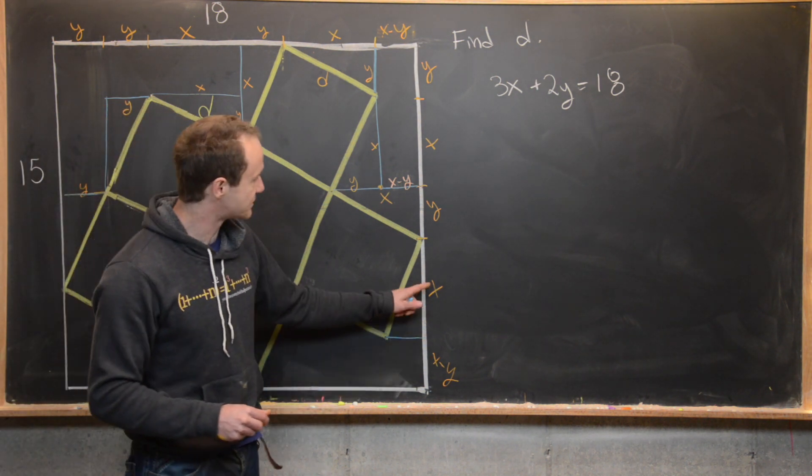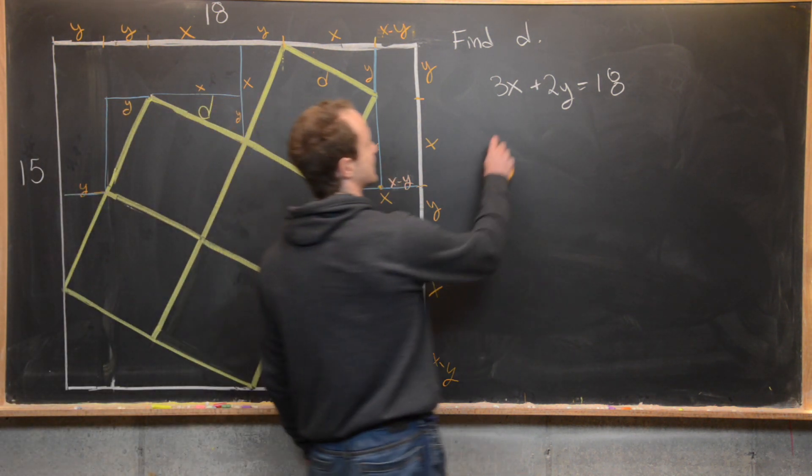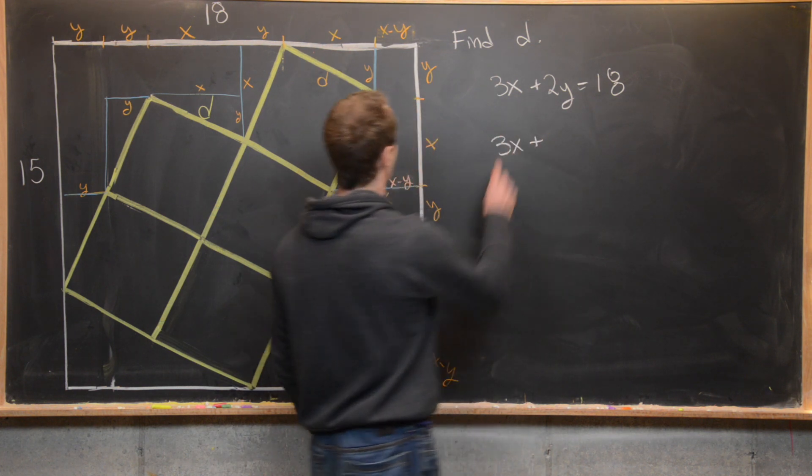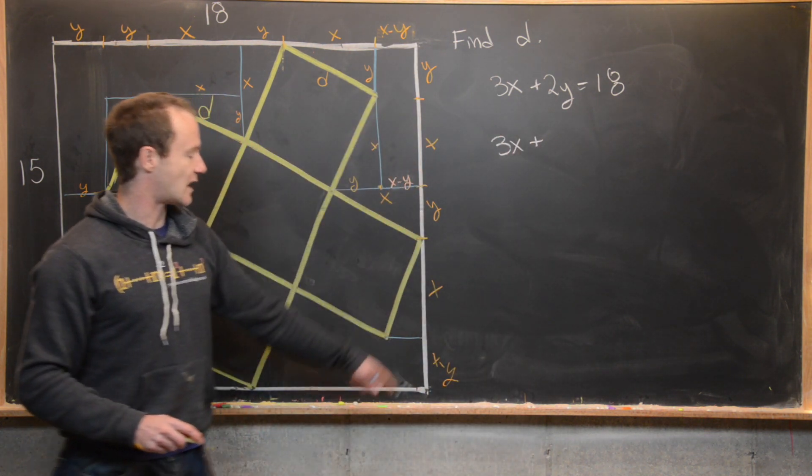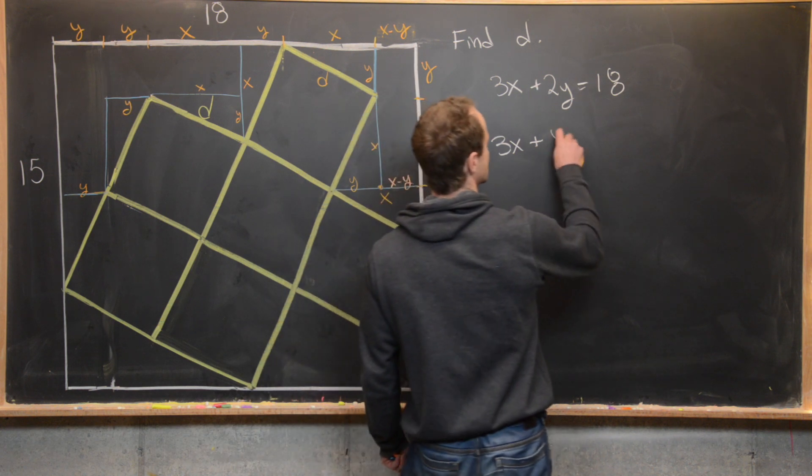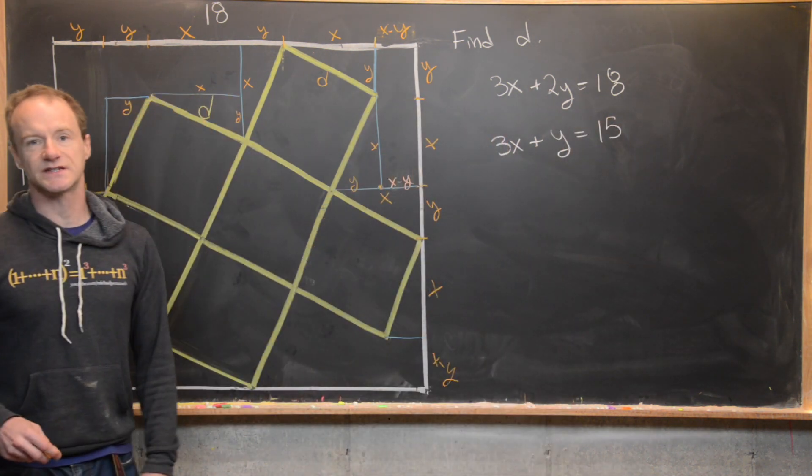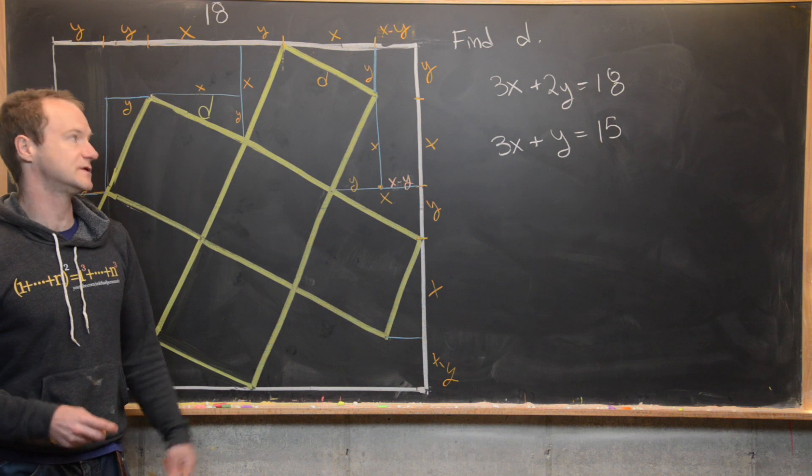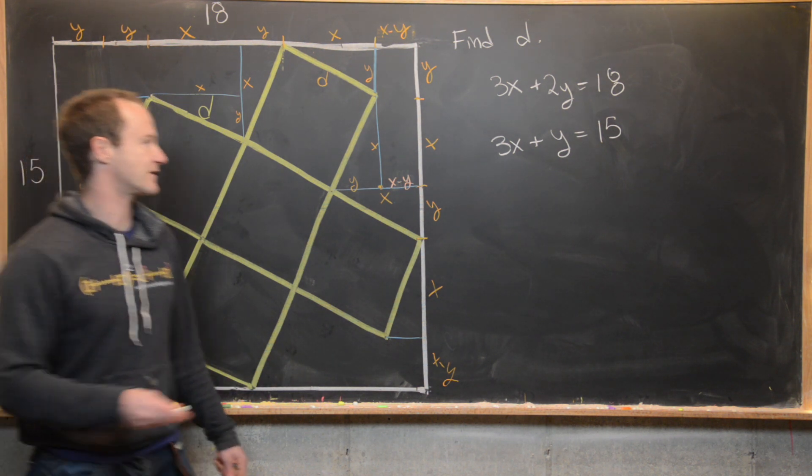But now we can sum all of those little pieces together and we'll get 15. So let's see what that is. X plus X plus X. So that's going to be 3X plus. Now we have Y plus Y minus Y. So that's going to be plus Y equals 15. But now we have a system of two equations and two unknowns. We can easily solve for each of our variables.